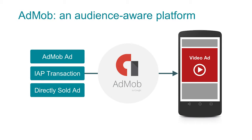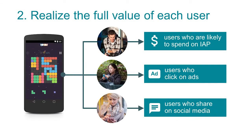AdMob is basically a smart monetization engine that crunches an enormous amount of data about your app, your users, and your advertisers in a fraction of a second, and finds the right monetization opportunity — whether that's an in-app purchase promotion or an ad by AdMob or another network. This leads me to the second challenge: once you know your users, how do you treat different users differently? How do you adapt your strategy to those different types of users? The ultimate objective is realizing the value of your audience — and in some cases this requires pushing in-app purchase promotions, while in other cases that value is realized through ads.